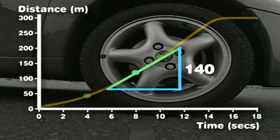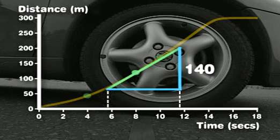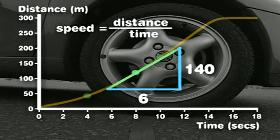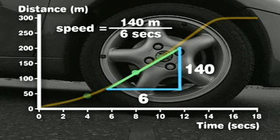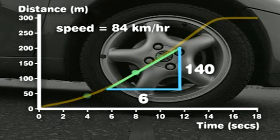Similarly, if we extend the line to the time axis, the time is 11.8 seconds minus 5.8 seconds, which equals 6 seconds. The gradient is 140 meters divided by 6 seconds, which is 23.3 meters per second, and that's 84 kilometers per hour.